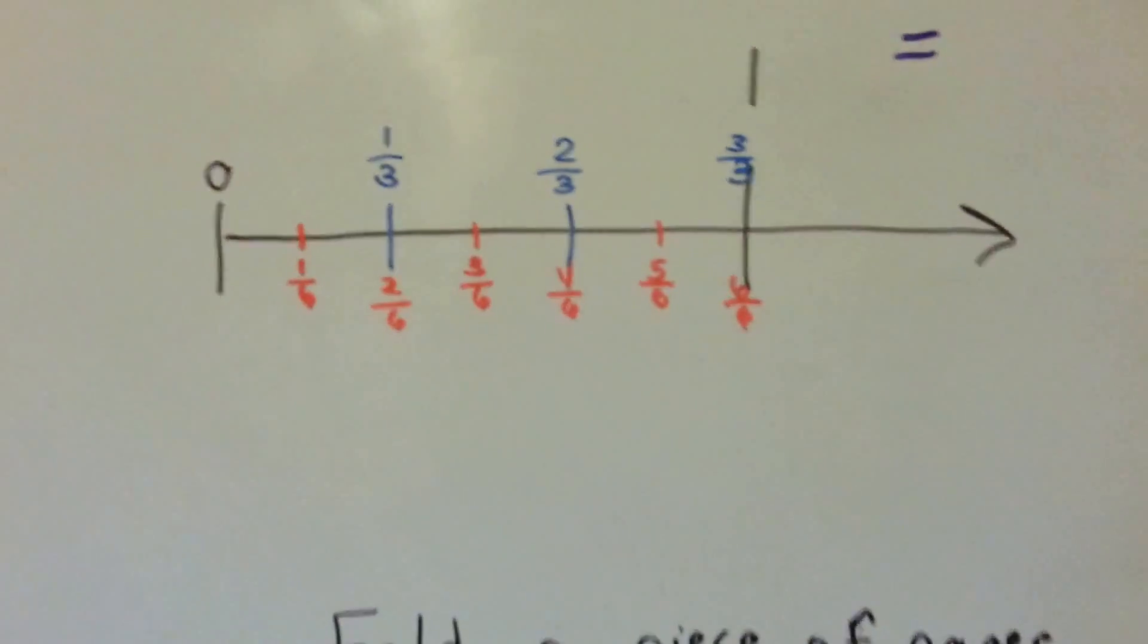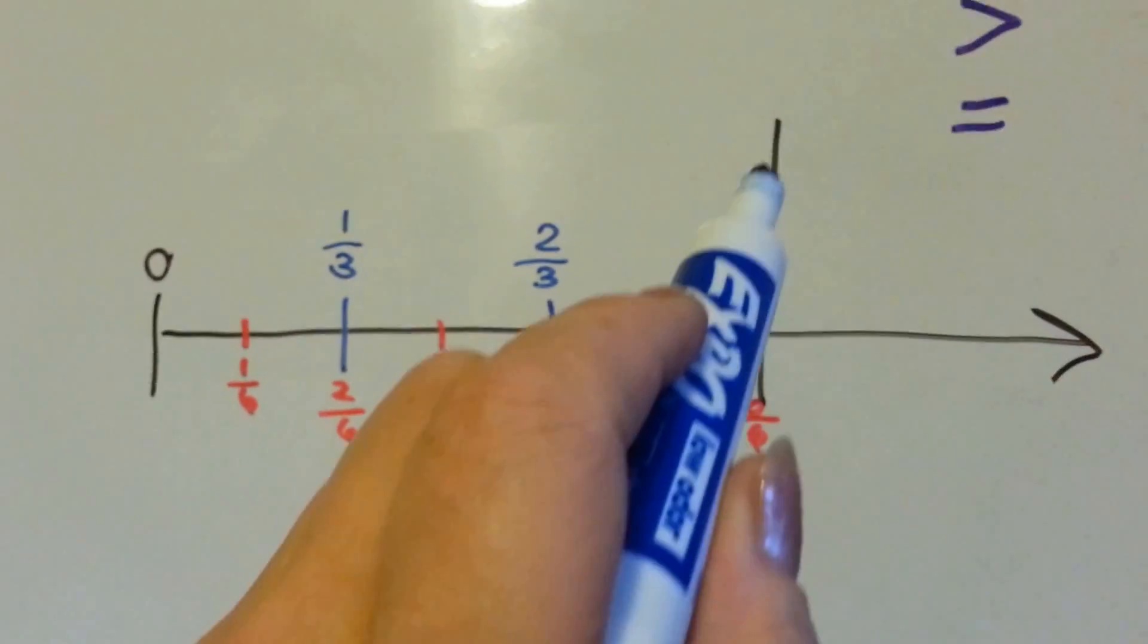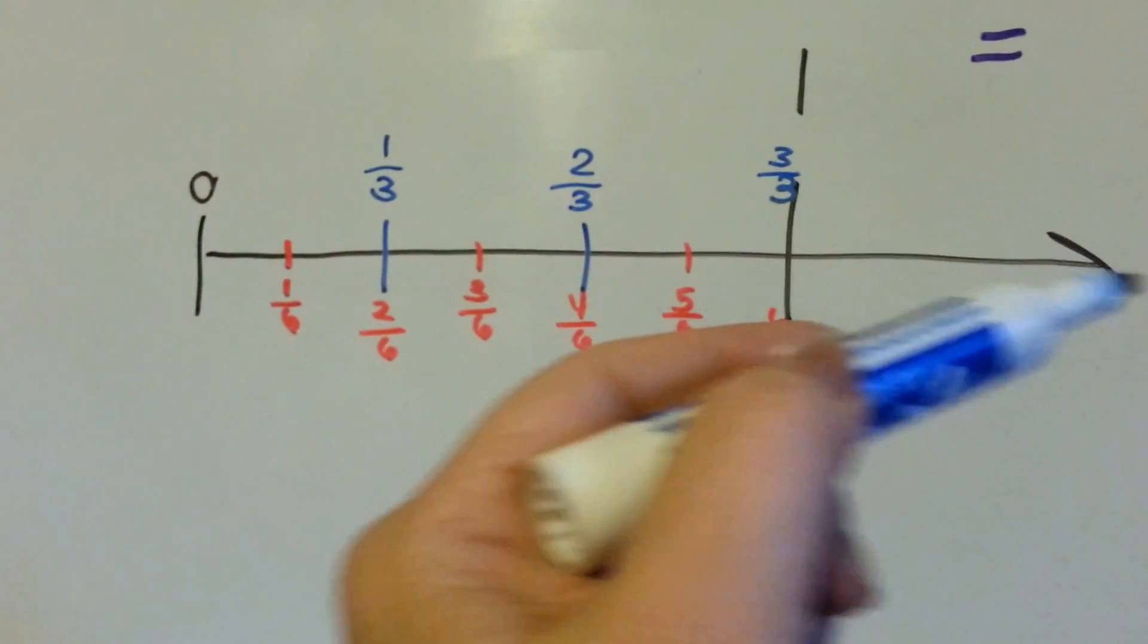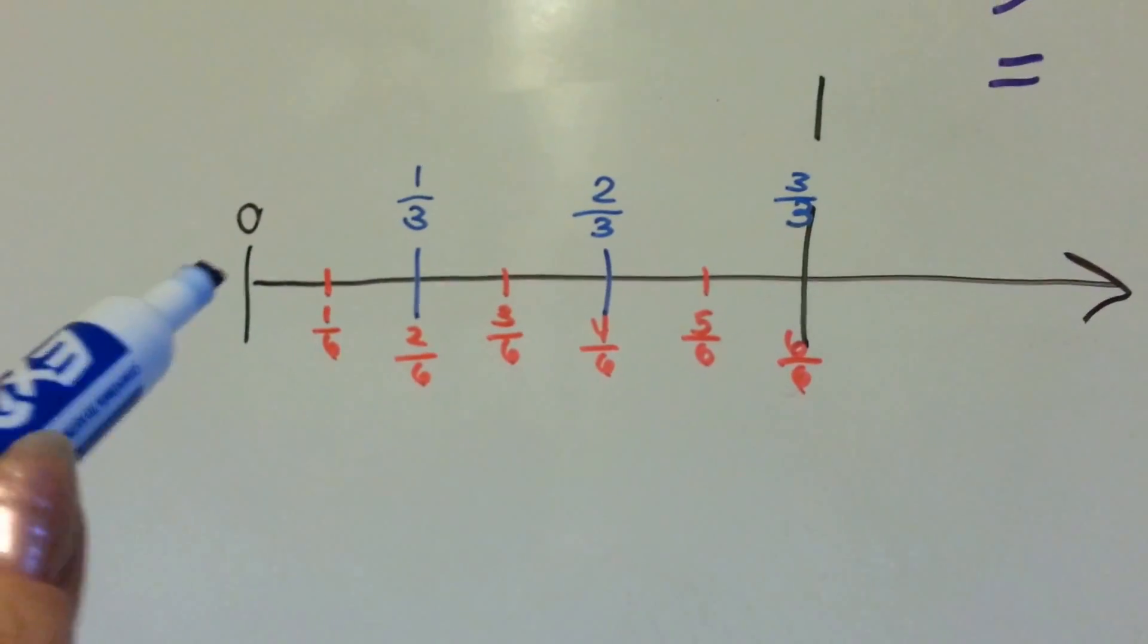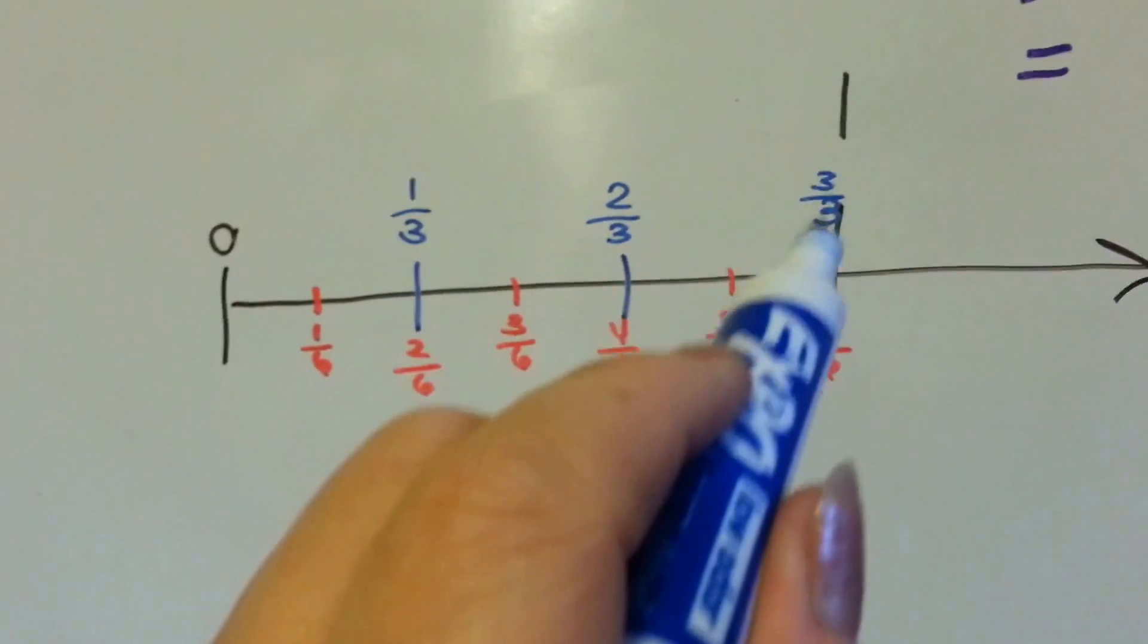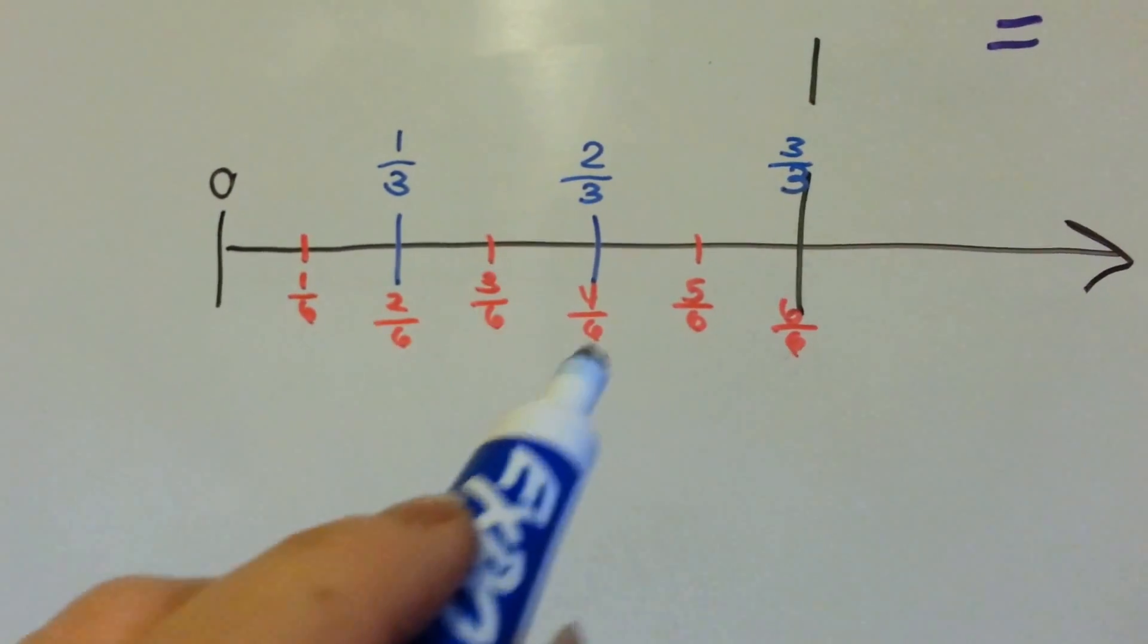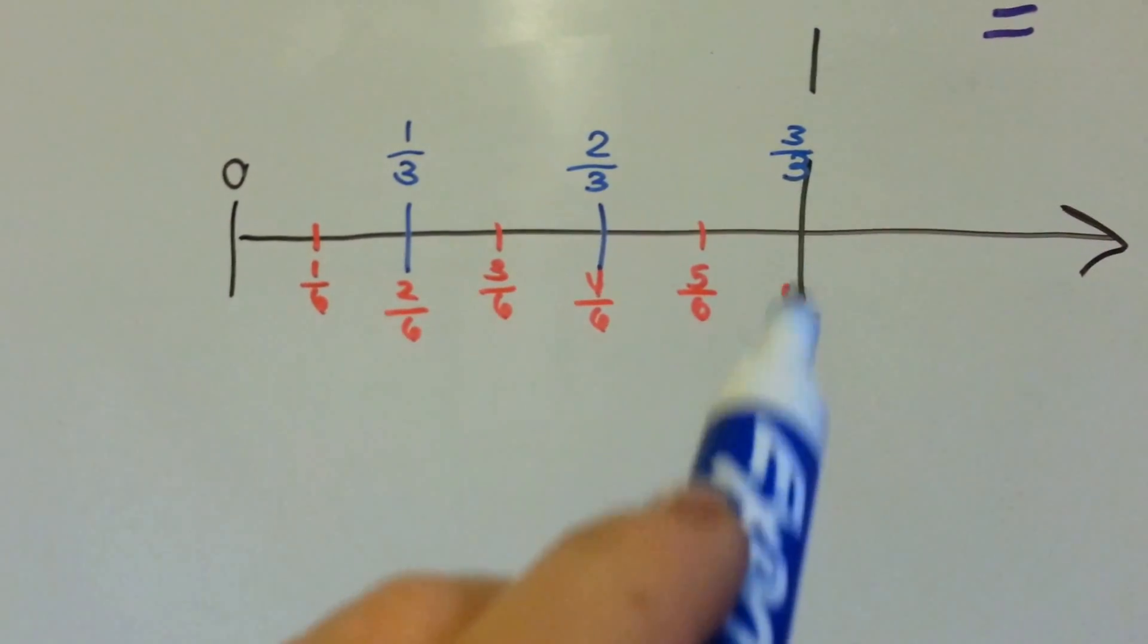So let's look at a number line now. Here we have a number line and it goes from zero to one and it keeps on going that way. But I've broken it into a third, two thirds, and three thirds, which is one. And on the bottom I've got one sixth, two sixth, three sixth, four sixth, five sixth, and six sixth, which is one.